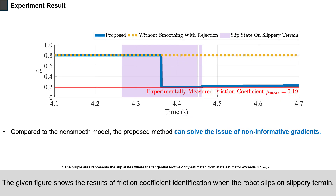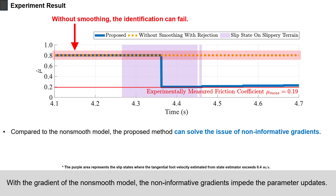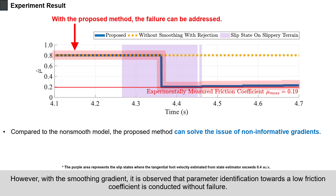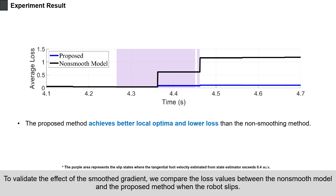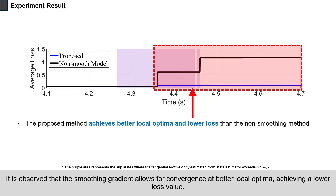The given figure shows the results of friction coefficient identification when the robot slips on slippery terrain. With the gradient of the non-smooth model, the non-informative gradients impede the parameter updates. However, with the smoothing gradient, it is observed that parameter identification towards a low friction coefficient is conducted without failure. To validate the effect of the smoothed gradient, we compare the loss values between the non-smooth model and the proposed method when the robot slips. It is observed that the smoothing gradient allows for convergence at better local optima, achieving a lower loss value.